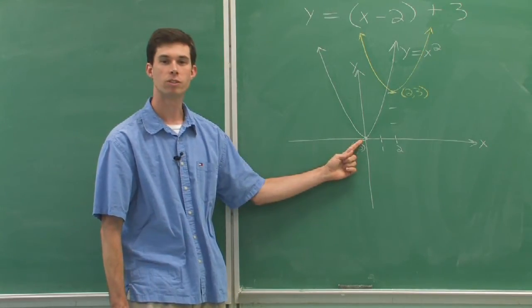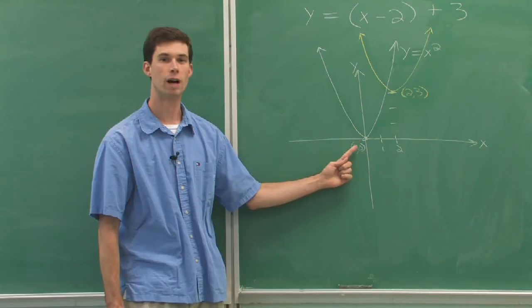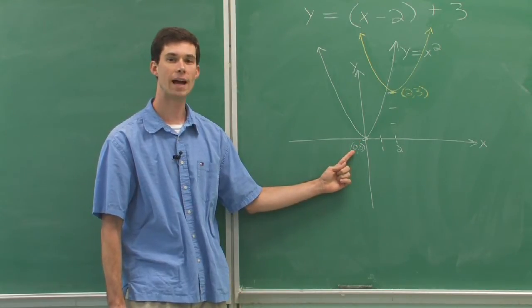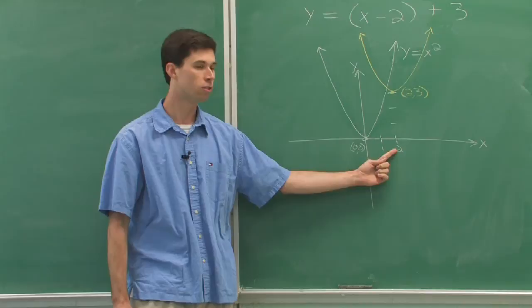So if we consider the vertex of the original parabola, it's 0, 0. Moving it to the right 2 would move it to 2, 0.